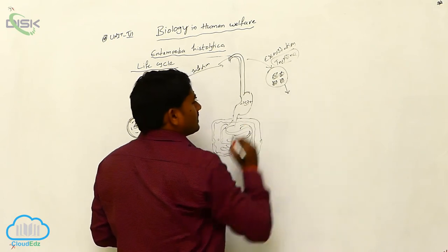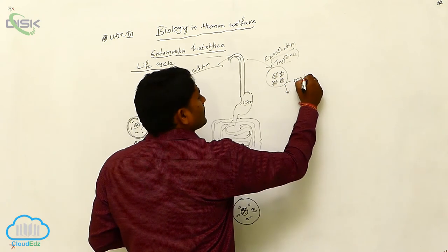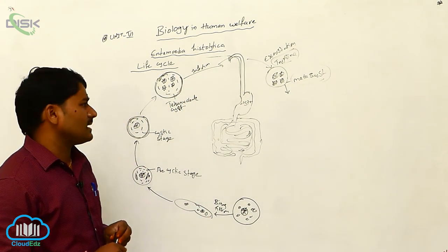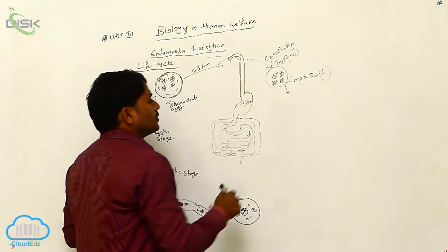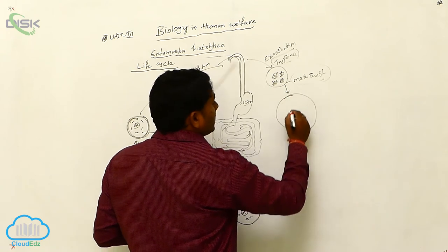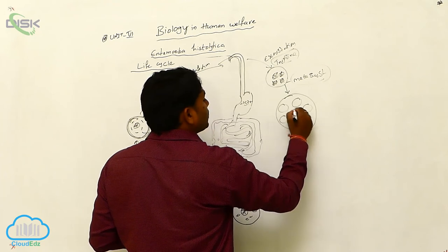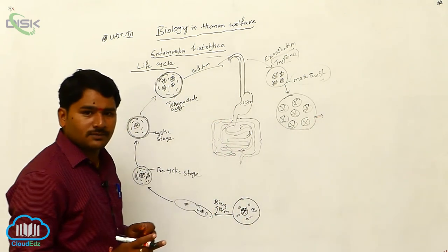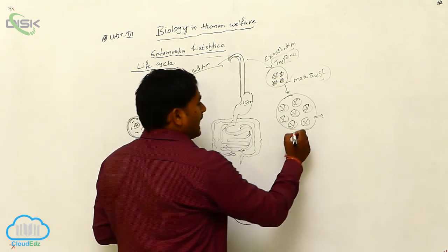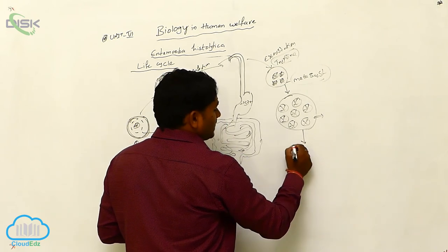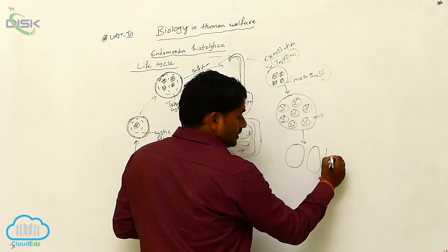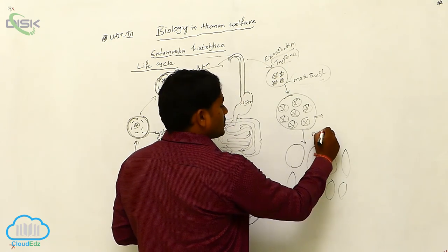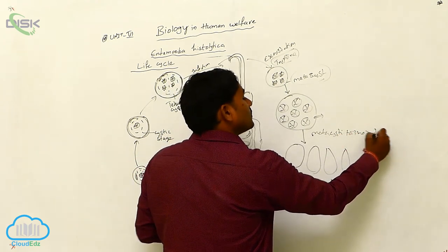After excystation, this is called the metacyst. When the metacyst comes outside, the nucleus of the metacyst undergoes two divisions, and 8 nuclei are formed. Each nucleus receives some cytoplasm. These 8 nuclei are then released outside as metacystic trophozoites.